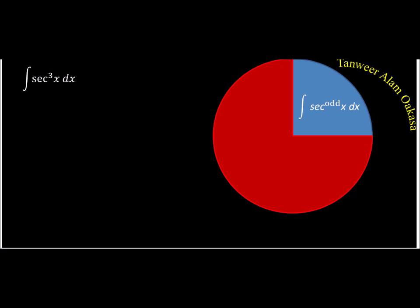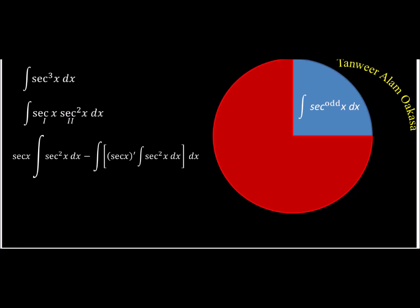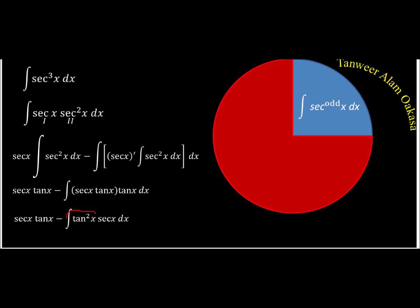Whenever we have sec to power odd, we split into two parts and use integration by parts. Start with sec³(x): split into sec(x) and sec²(x). Take sec²(x) as the second function since we know its integral. Using IBP: first × integral of second minus integral of (derivative of first × integral of second). The integral of sec²(x) is tan(x), and the derivative of sec(x) is sec(x)tan(x). So we get sec(x)tan(x) minus the integral of sec(x)tan²(x).